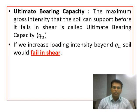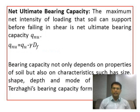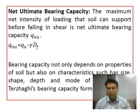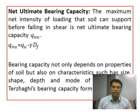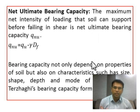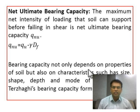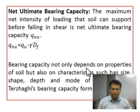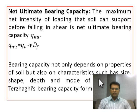The next term is the net ultimate bearing capacity. It is the maximum net intensity of loading — meaning you subtract the pressure due to the overburden — that the soil can support before failing in shear. It is denoted by Q_NU, and Q_NU = Q_U − γ·D_F. The bearing capacity depends not only on soil properties but also on the shape of the footing, depth, and mode of loading, all accounted for in Terzaghi's bearing capacity equations.